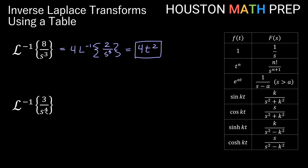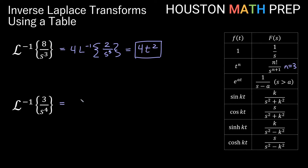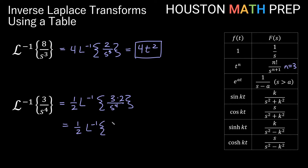Looking at the inverse transform of 3 over s to the 4. Using the t to the n formula with n equal to 3 to get s to the 4. We need 3 factorial on top, which is 6. To turn 3 into 6, I multiply inside by 2 and divide by 2 (multiply by one half) on the outside so I don't change the original expression. That gives us one half times the inverse transform of 6 over s to the 4, which is our 3 factorial over s to the 3 plus 1. Using n equal to 3, we get one half t cubed.